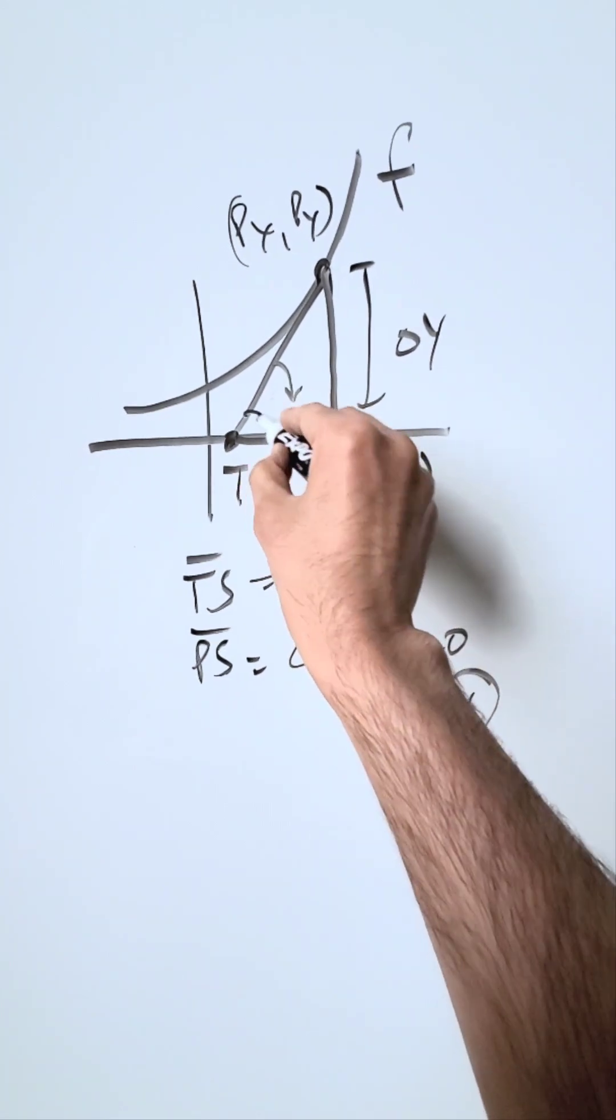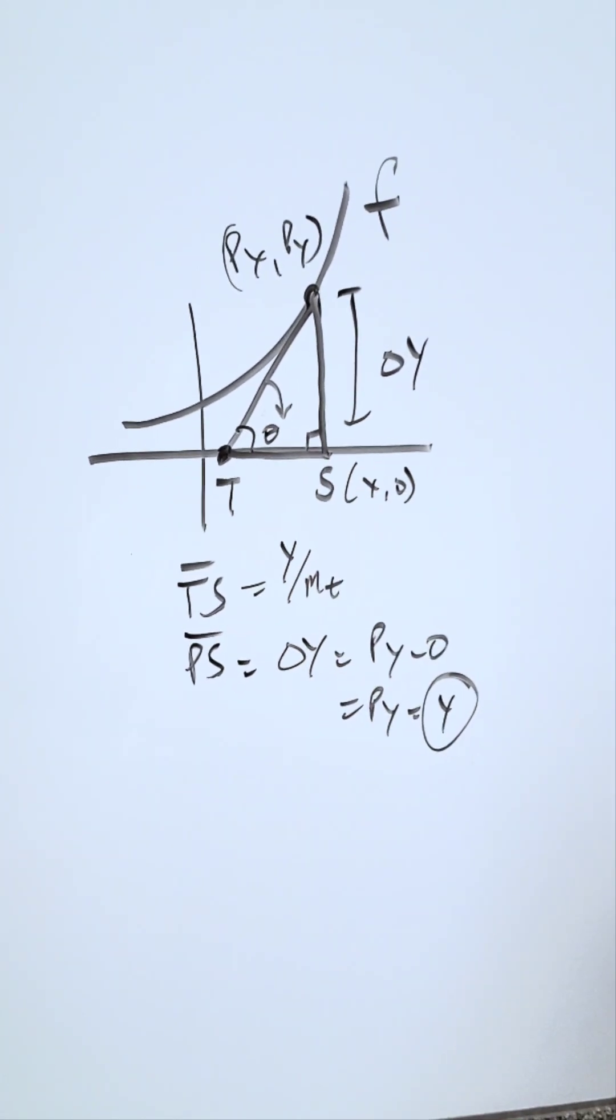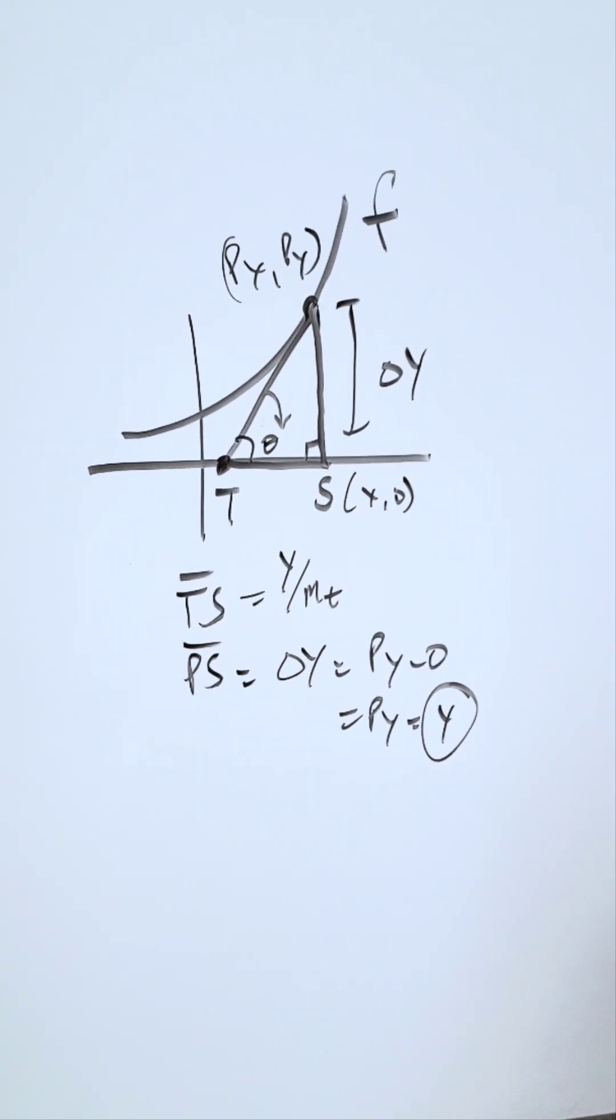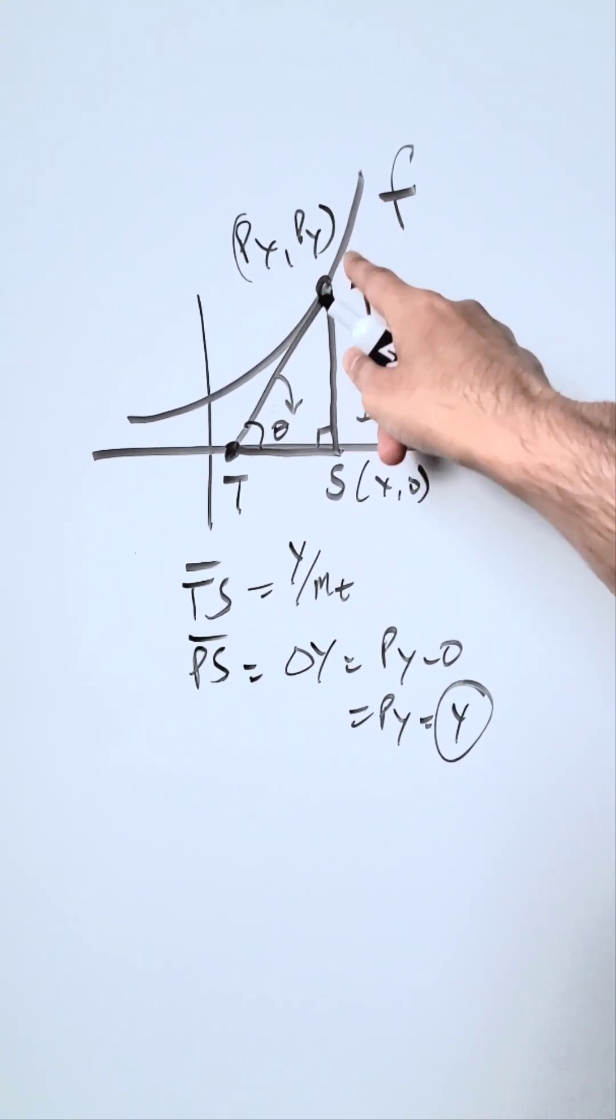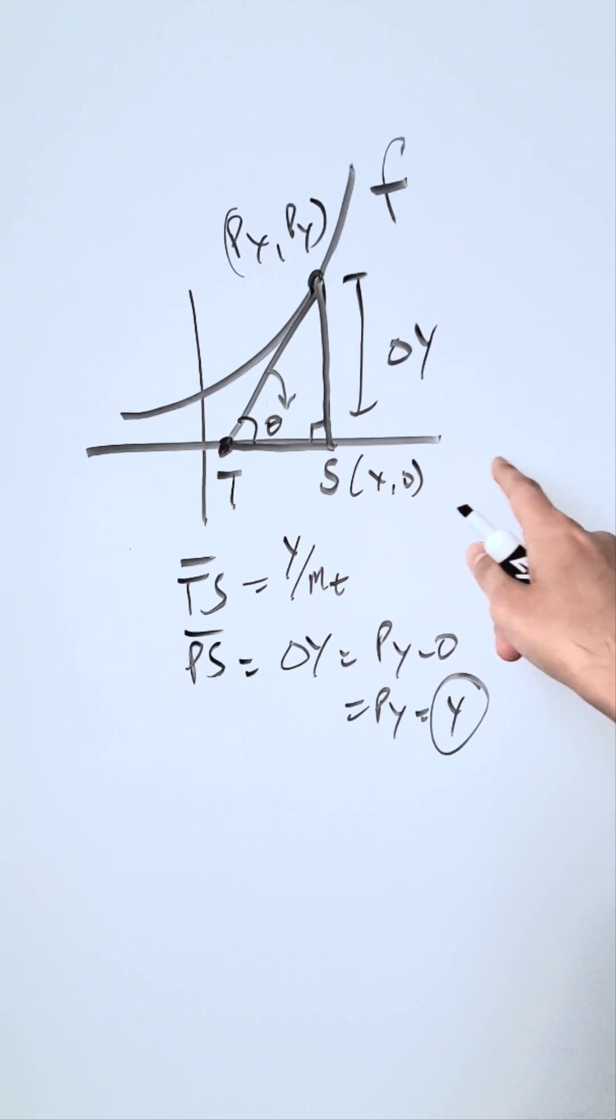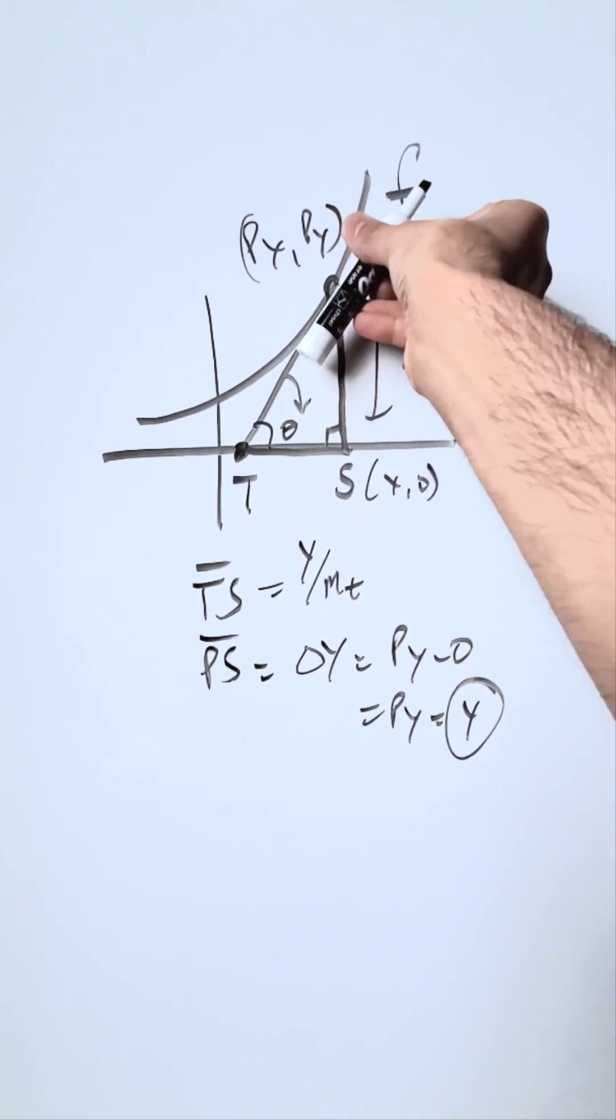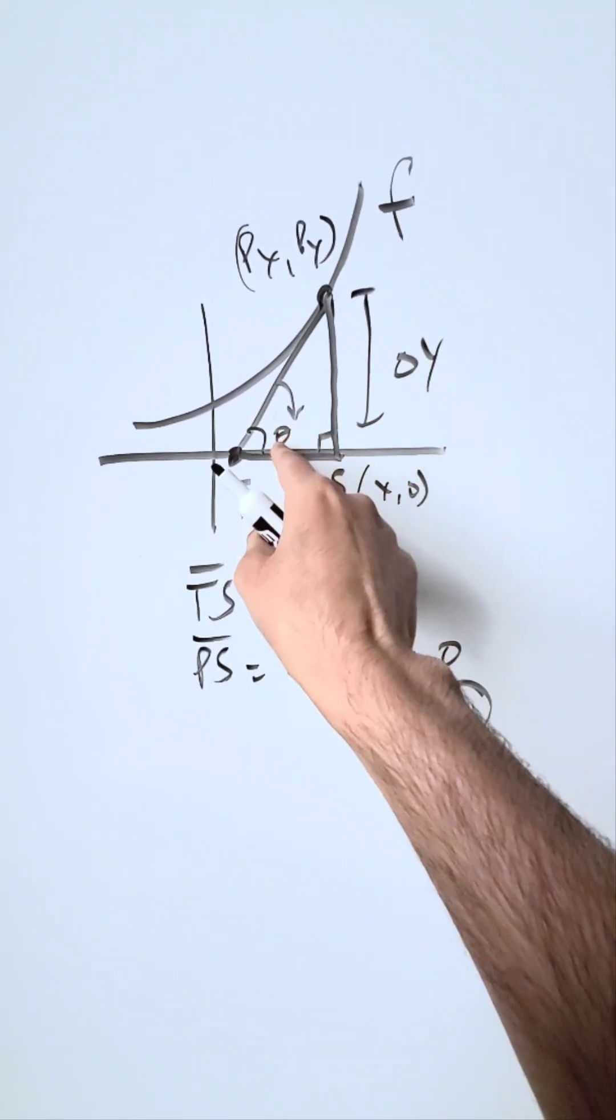Now, you're looking at a particular angle, that angle right there, theta. Theta represents the inclination of any tangent line you draw on a nonlinear function, so long as it's continuous. With regards to a reference x-axis horizontal, the angle of your tangent line to your x-axis is represented by that.